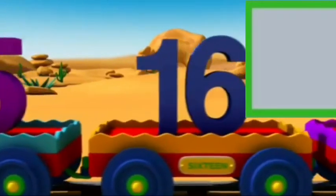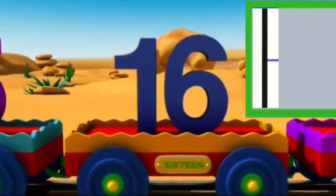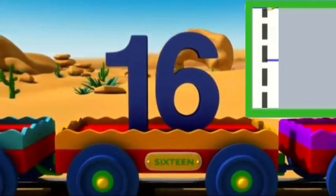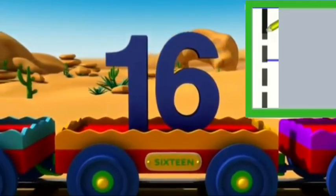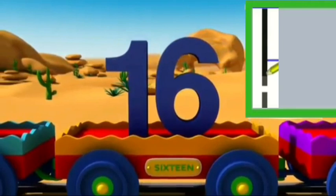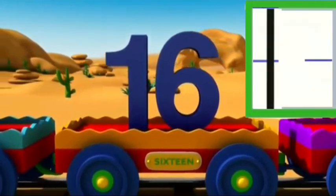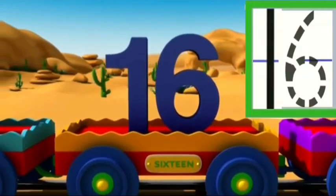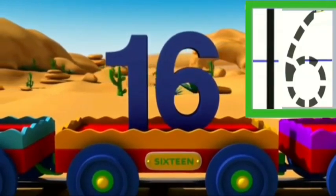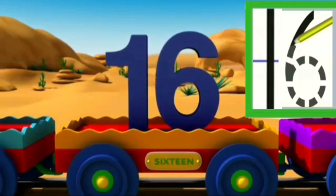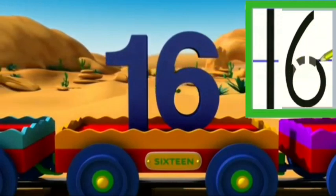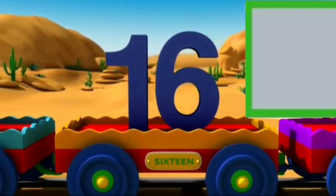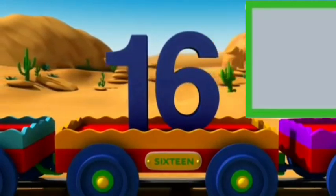To write number 16, firstly I will write number 1. Start from the top and go straight down. Now I write 6. Around a tree to left, then a small circle at bottom. What is the next number?